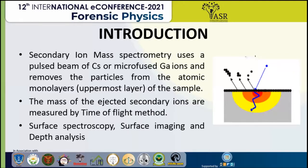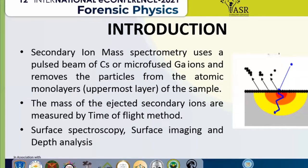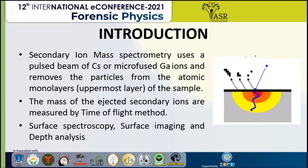In this technique, the instrument uses a pulsed beam of heavy ions, usually micro-focused gallium ions, and removes very minor particles from the uppermost atomic monolayer of the sample. The mass of the secondary ions ejected is measured by the time of flight method — how the time of flight from the detector is measured. This instrument can be used in three operational modes: surface spectroscopy, surface imaging, and depth profiling.